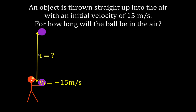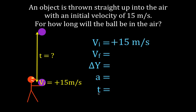What I like to do is write down all five of the variables in the kinematic equations: initial velocity, final velocity, change in position, acceleration, and time. Let's write down what we know. The initial velocity is 15 meters per second. Because it's a free-fall problem, we know the acceleration is -9.81 meters per second squared. We're asked to find the time. We're not given the change in position, so we won't use that. The question now is: what is the final velocity?